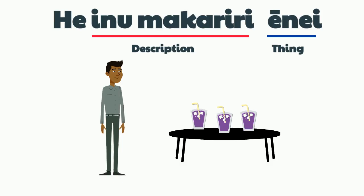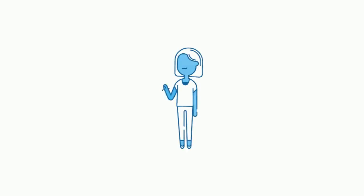There you have it — now you know how to describe things in Māori. Ka kite!